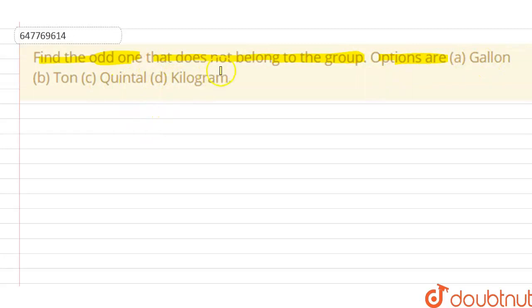We have to tell which one doesn't belong to this group. This means you have a choice. The options are: gallon, ton, quintal, and kilogram. Okay students, see how we can know.